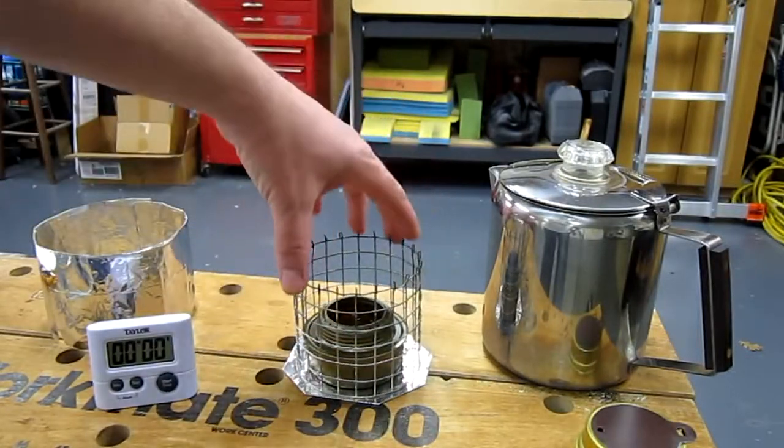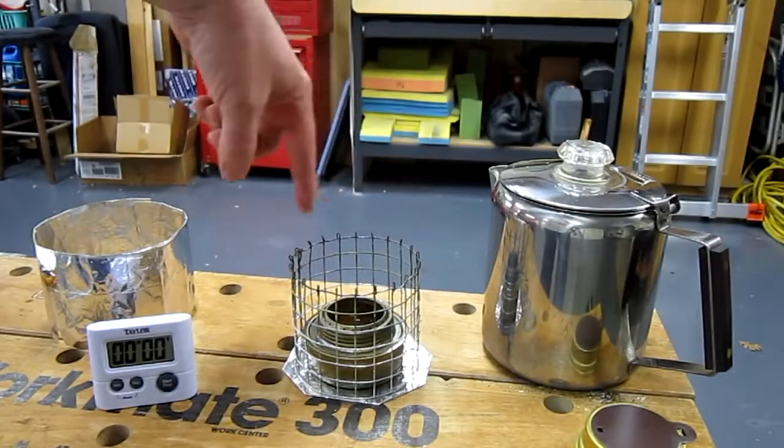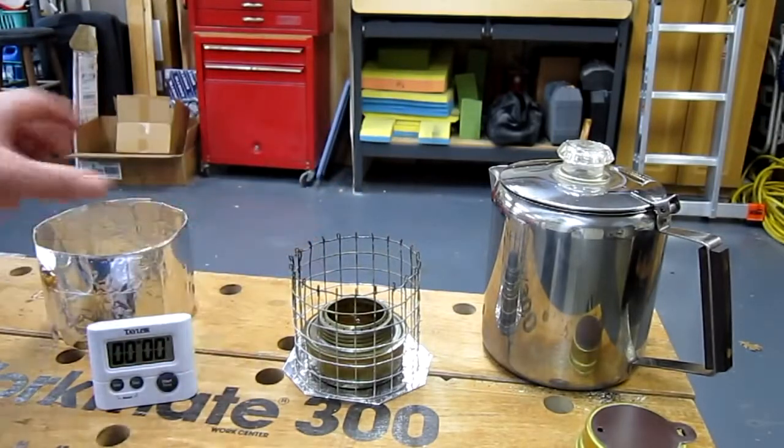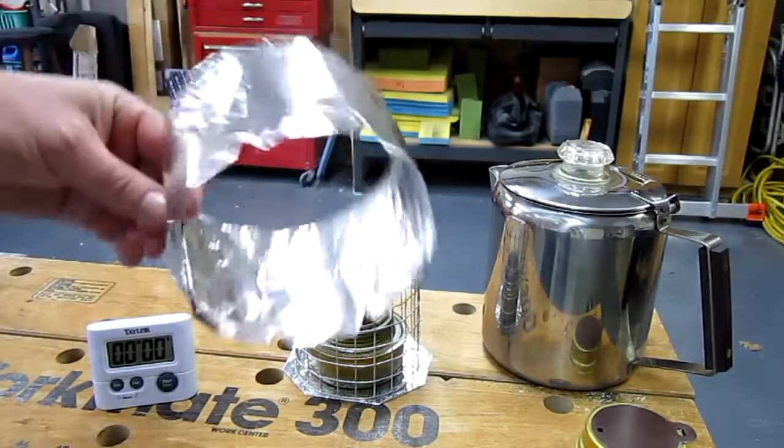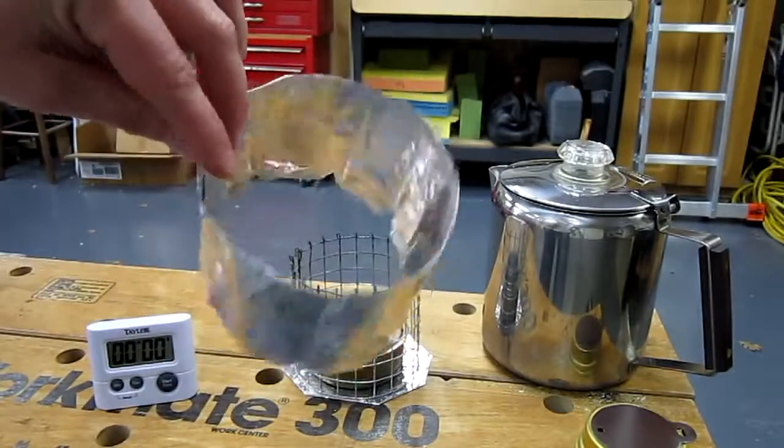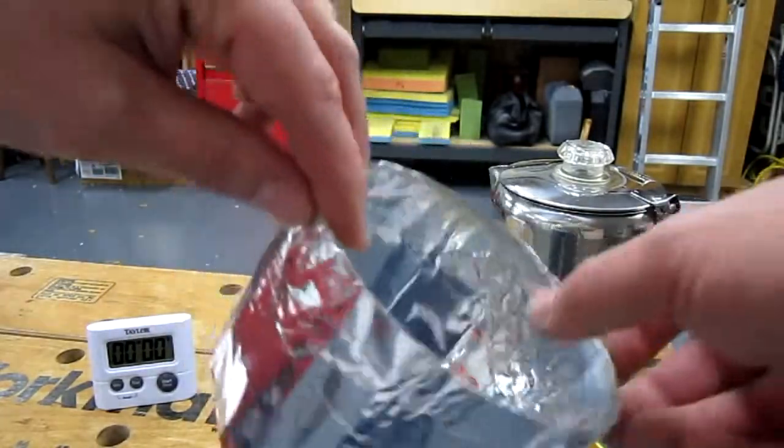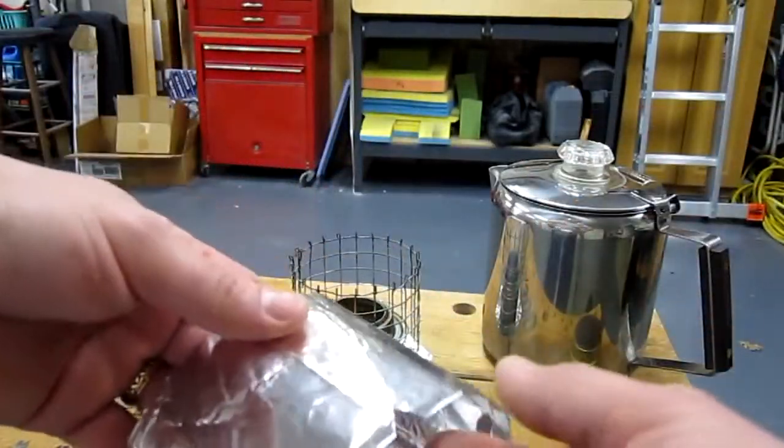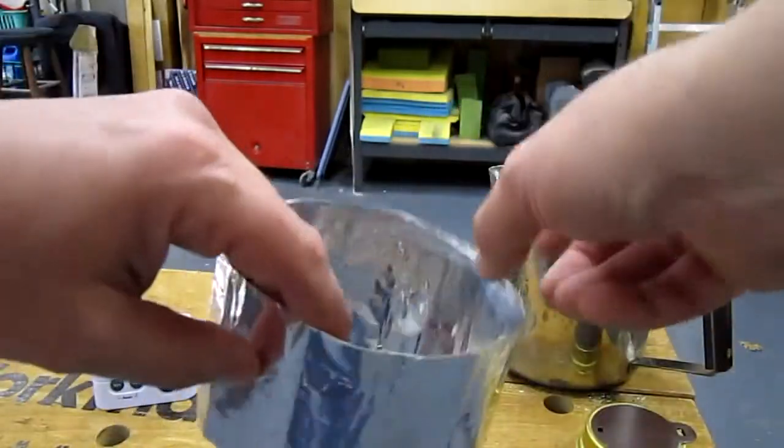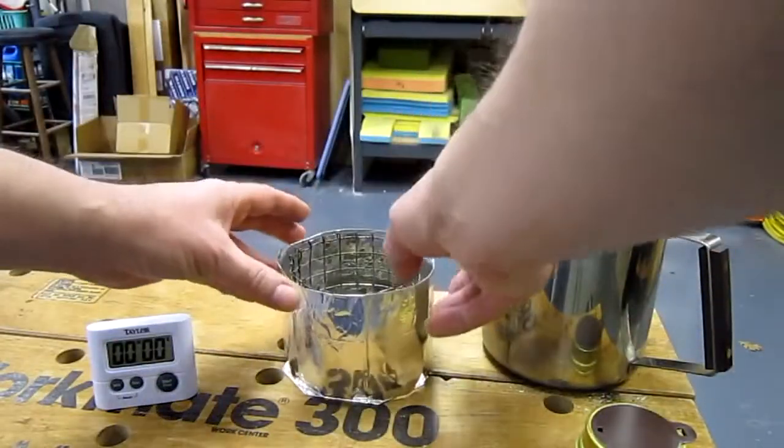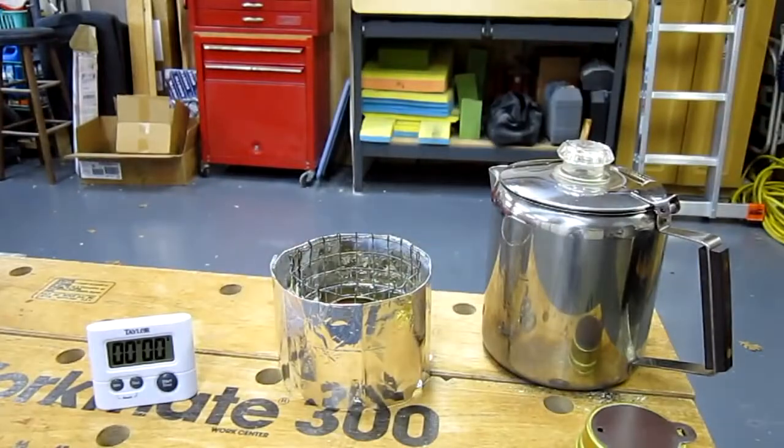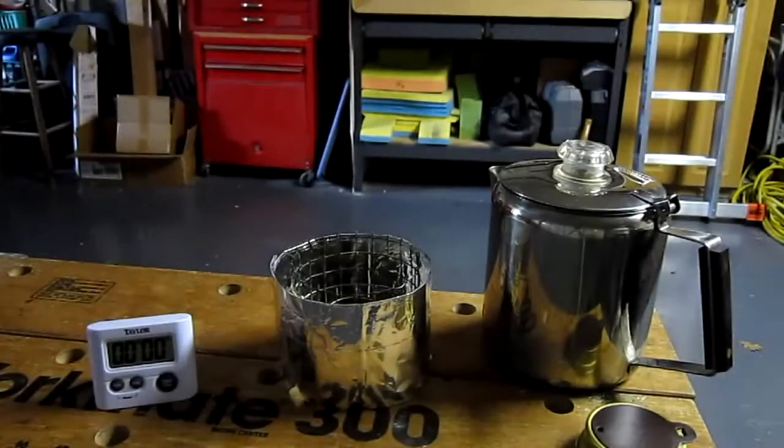But instead of the foil wind heat shield wrapped around the hardware cloth, I just simply made one, a stand-alone unit, same 2-ply heavy-duty aluminum foil. Put that around the unit here with the lights, we'll fire that puppy up.